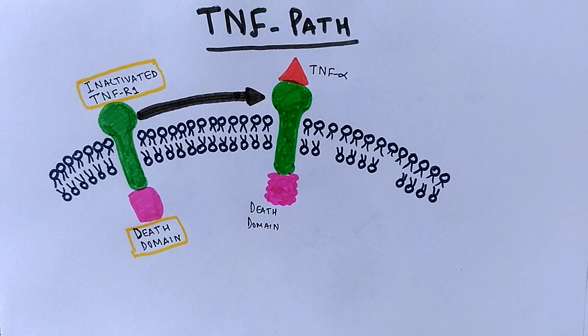It always keeps the death domain silent, therefore the cell survives. But once the cell receives the apoptotic signal, there is a dissociation of the inhibitory protein SODD from the intracellular death domain, thereby activating the death domain.